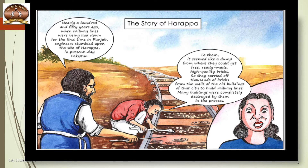So they carried whatever bricks were available and constructed the railway line. As they moved far away from that area in search of more bricks, they just saw that it was actually a city, and these bricks were from the walls of old buildings destroyed due to some reason. Since these buildings were already in ruins, they thought why not take all the available bricks to help construct a better railway line — and so all the buildings were destroyed by these people.